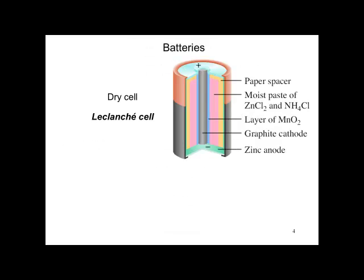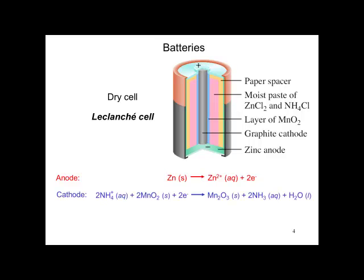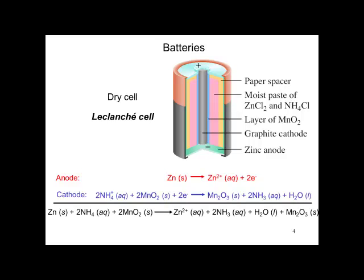Let's take a look at some batteries. Here's the common dry cell battery, also called the Leclanché cell. Notice it has a piece of graphite for a cathode and the zinc anode, which is actually the shell of the battery. The electrolyte is a moist paste of zinc chloride and ammonium chloride. The anode shows the oxidation of zinc to zinc 2+. The cathode is the reduction of the manganese oxide. This is the overall reaction.